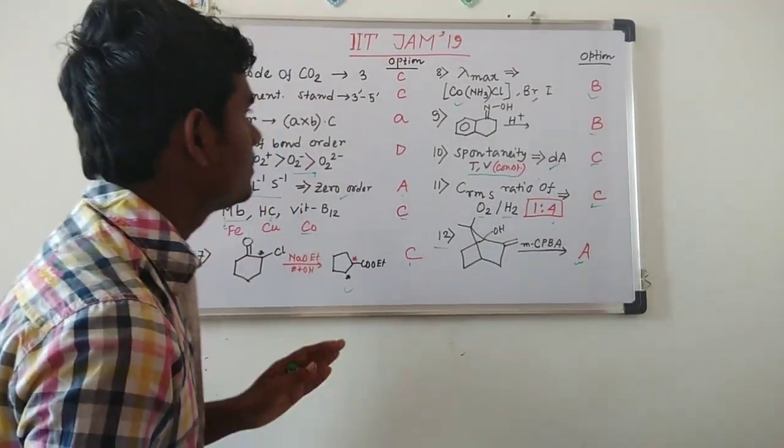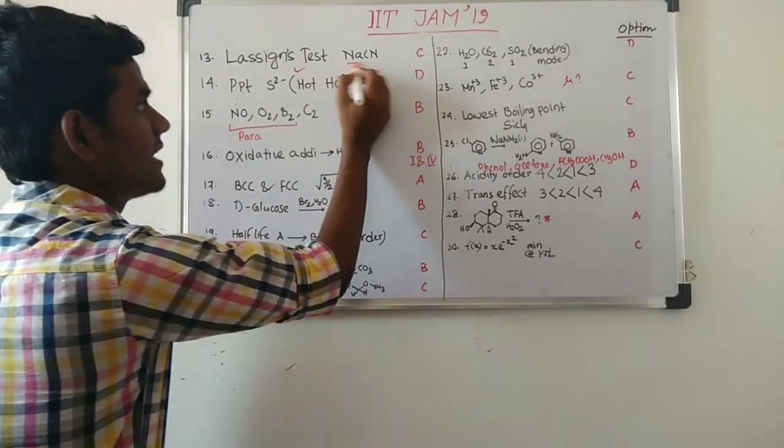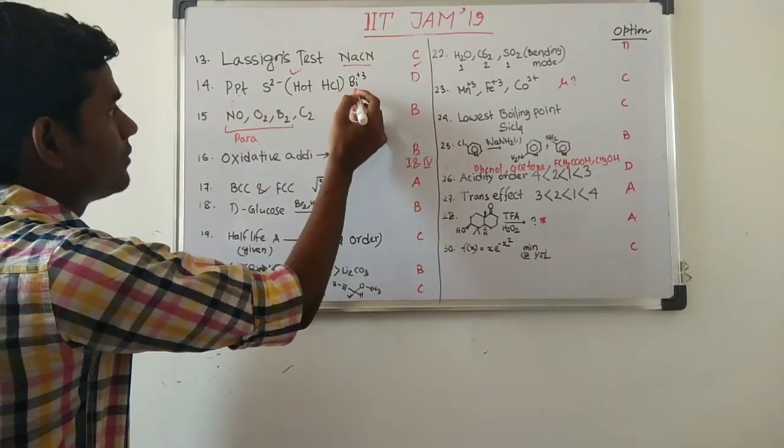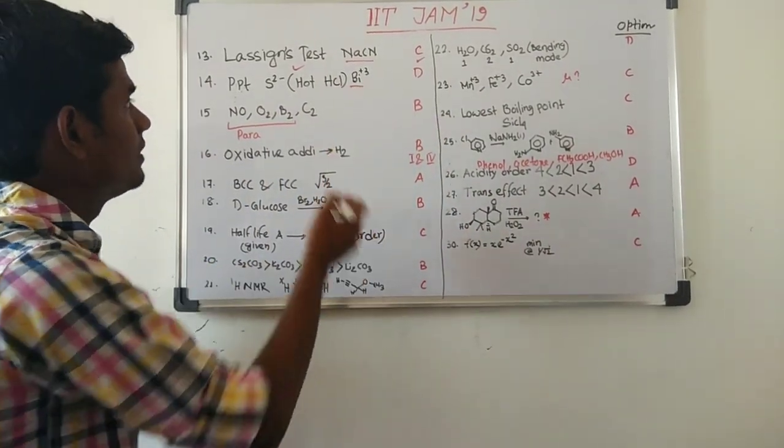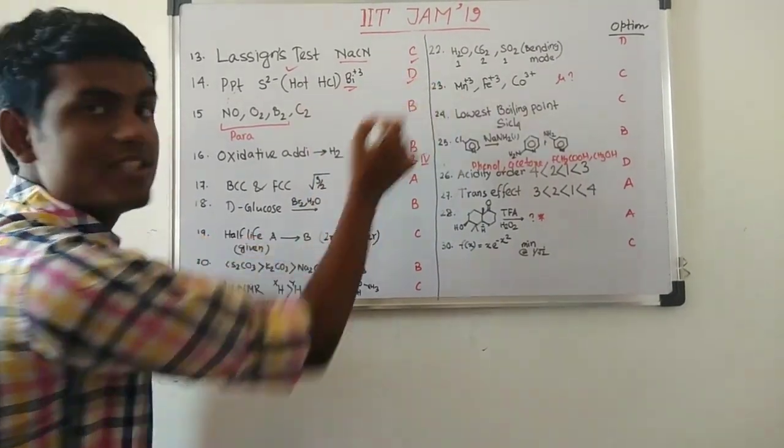They have asked a question of Lassaigne's test: what will be the answer? It is NaCN and the option will be C. Then there are some metals, metal ions given, and which one will precipitate, that's the question, and it will be bismuth 3 plus and the option is D.